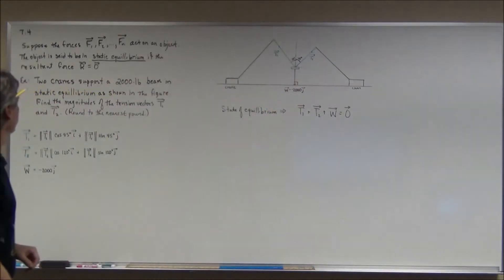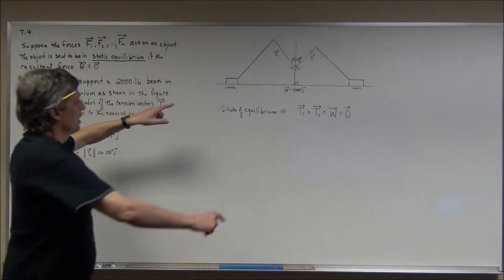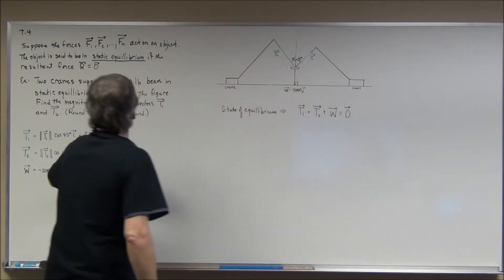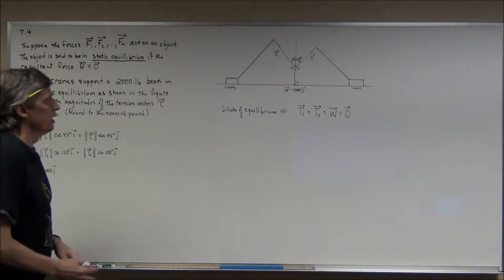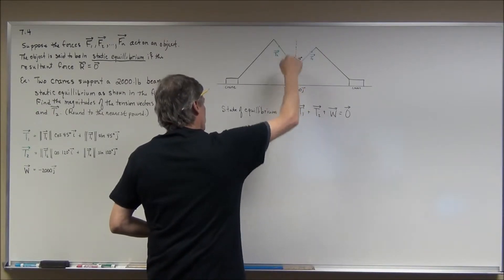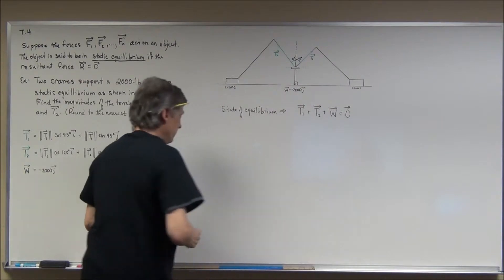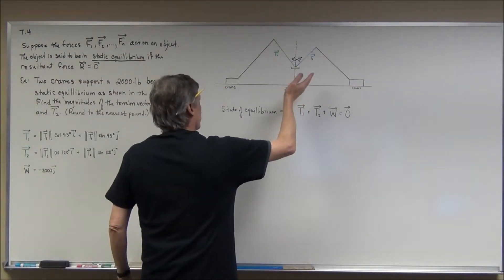Find the magnitude of the tension vectors — the lines that go from the tops of the cranes to the beam — vector T sub 1 and vector T sub 2. We're going to round to the nearest pound. What I have tried to draw here is the fact that the weight of this beam is drawing downward, so that's negative 2,000 times j.